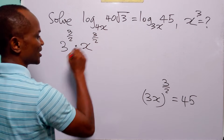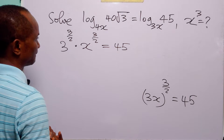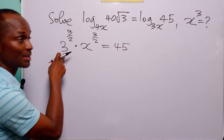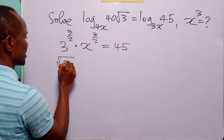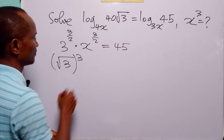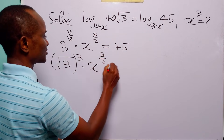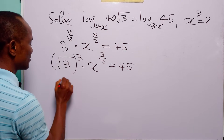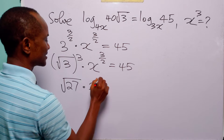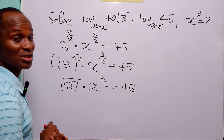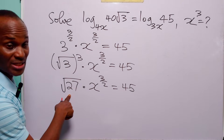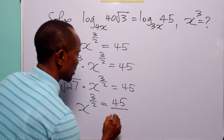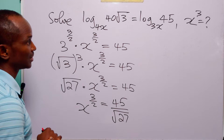Expanding the bracket gives us 3^(3/2) multiplied by x^(3/2) equals 45. Now 3^(3/2) is the square root of 3³, which is the square root of 27. So √27 multiplied by x^(3/2) equals 45. Dividing both sides by √27 gives us x^(3/2) = 45 / √27.